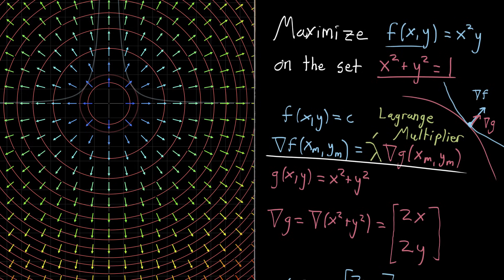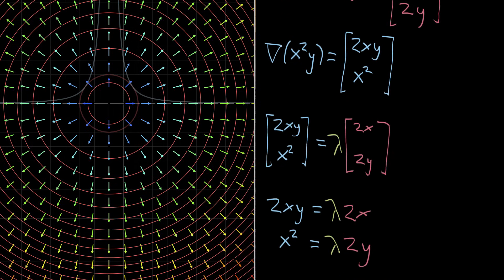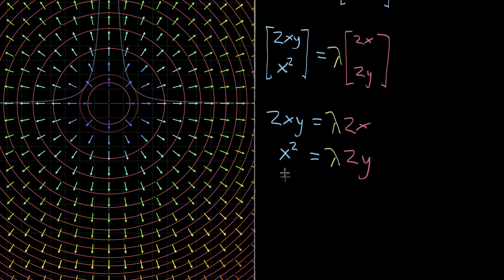And the third equation is something that we've known the whole time. It's been part of the original problem. It's the constraint itself, x squared plus y squared equals 1. So that third equation, x squared plus y squared is equal to 1.